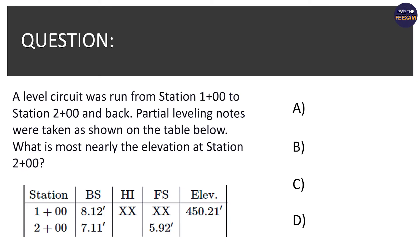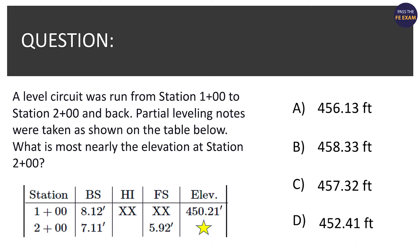So let's jump into our survey question. A level circuit was run from station 1+00 to station 2+00 and back. Partial leveling notes were taken as shown in the table below. What is most nearly the elevation at station 2+00? You can see your options there, A through D, and the star indicates the elevation we're looking for at station 2+00.